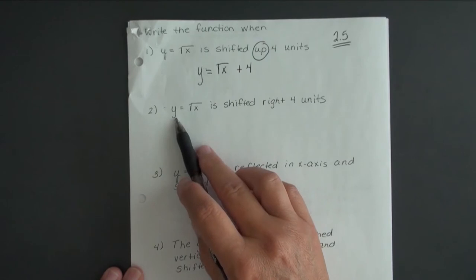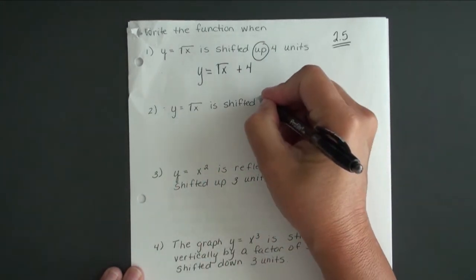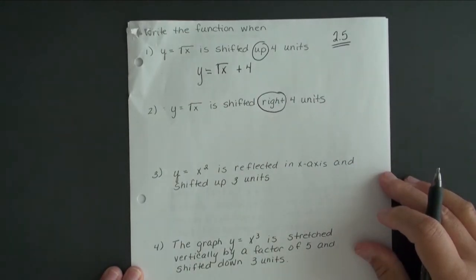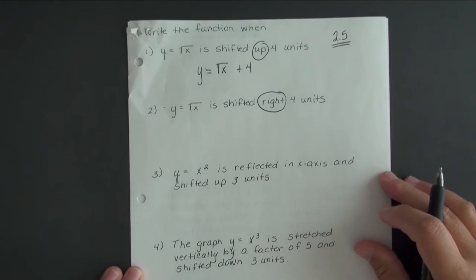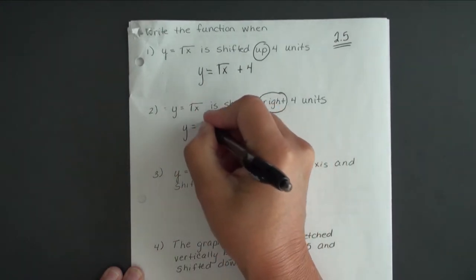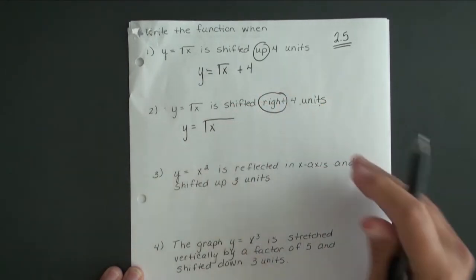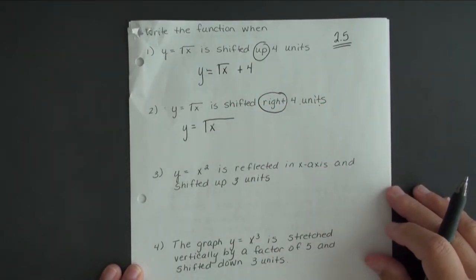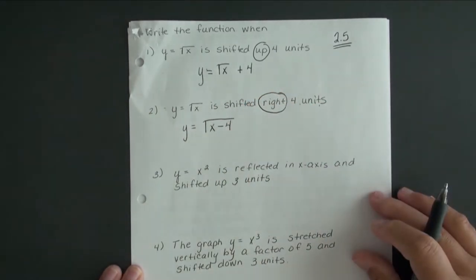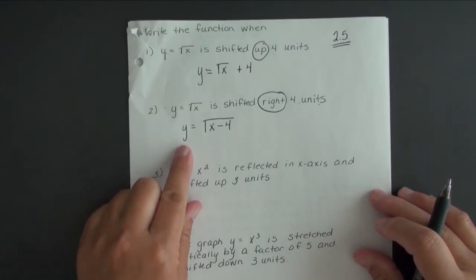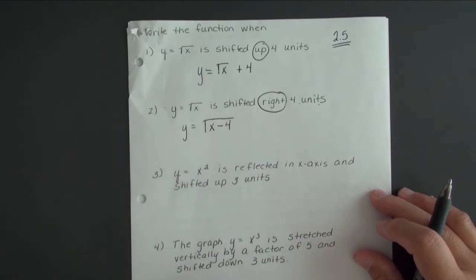In our second example, we're going to take the same function but shift it right, or horizontally, 4 units. When we do a horizontal shift, either right or left, the number we're using to shift must be grouped inside with the x. If we go right, it's minus 4. So y equals square root of x minus 4 would be right 4 units.